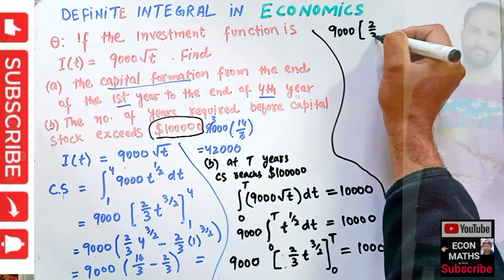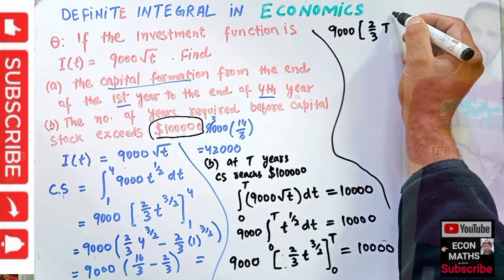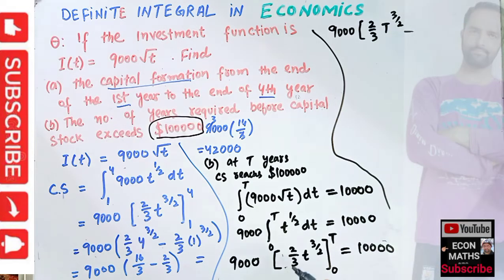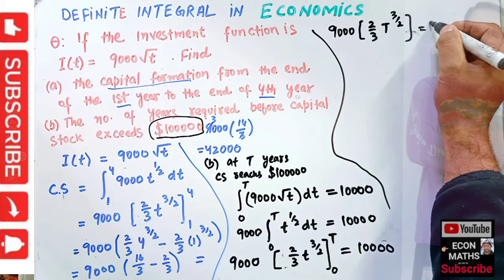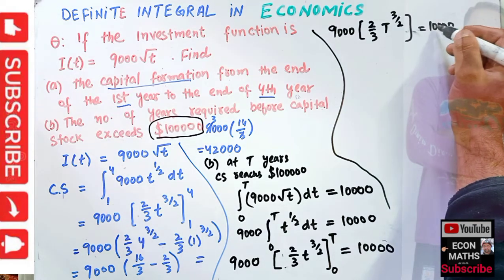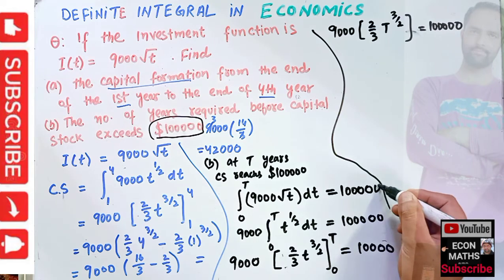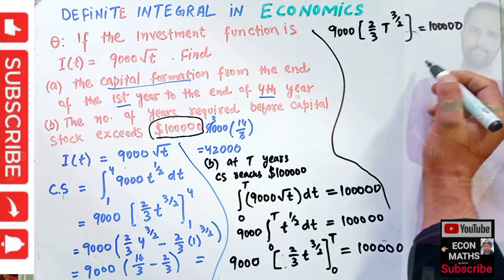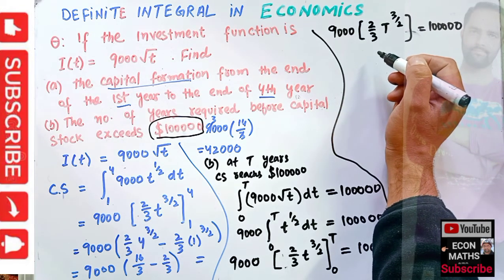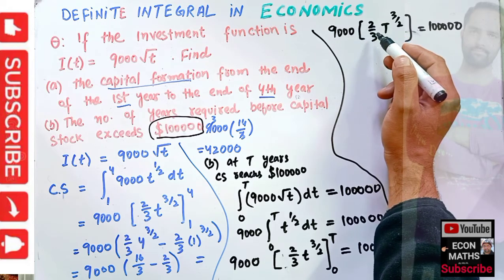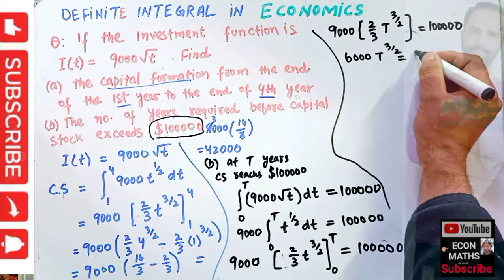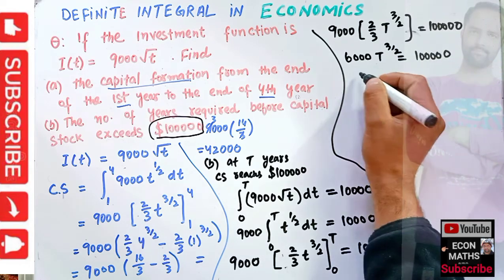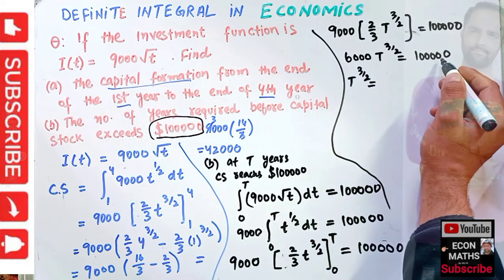Evaluating from 0 to T: at T we have 2/3 × T^(3/2), and at zero the term becomes zero. So we have 9000 times 2/3 times T^(3/2) equals one lakh. Simplifying, 9000 times 2/3 gives us 6000. So 6000 × T^(3/2) = 1,00,000. Transposing, T^(3/2) = 1,00,000 / 6000 = 16.67.